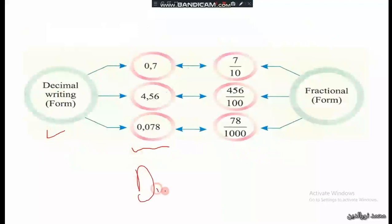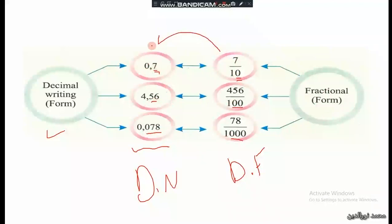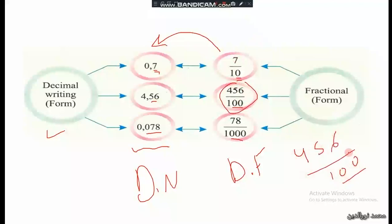As a summary for decimal writing: zero point seven has one decimal digit so it's over ten; two decimal digits gives over hundred; three decimal digits gives over thousand. For decimal fractions written as decimal numbers: four hundred fifty-six over hundred has two zeros, so two decimal digits — it can be written as four point fifty-six.